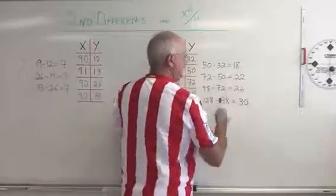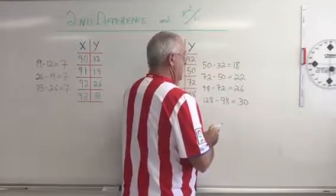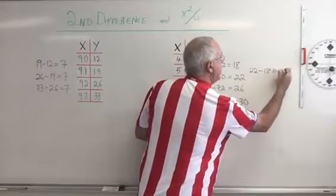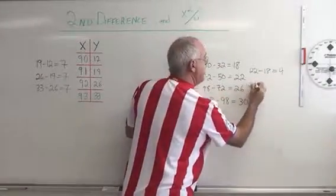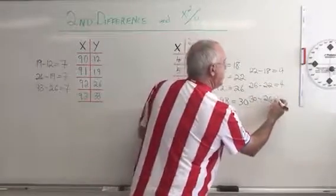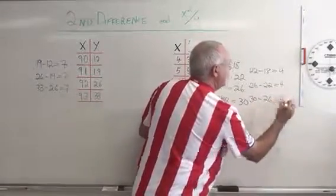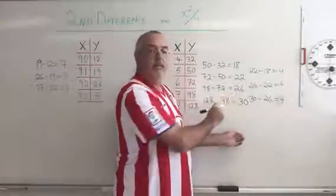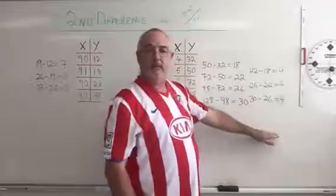So, I'm saying 22 minus 18 equals 4, 26 minus 22 equals 4, 30 minus 26 equals 4. Now, I keep on getting the same answer, but it's not from the first set of differences, it's from the second set of differences.